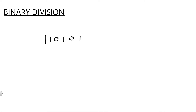Let's say we want to divide 10101 by 11. The first thing we need to consider is our divisor, and our divisor has two digits, which is 11. Then we need to check if the first two digits of the dividend, which is 10, is greater than or equal to 11. Is 10 greater than or equal to 11?